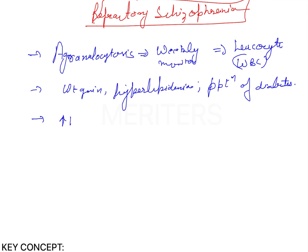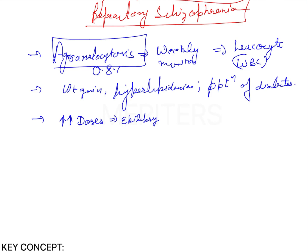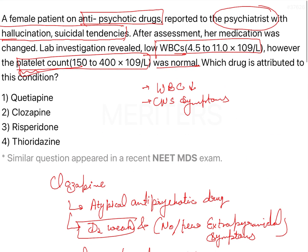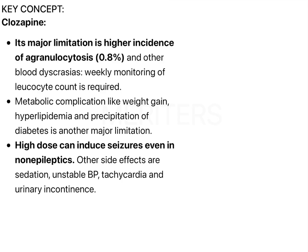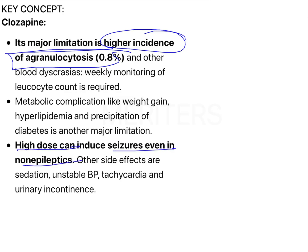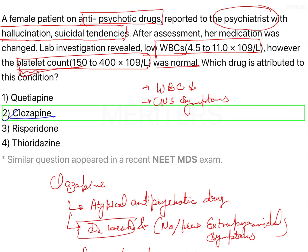If this drug is given in high doses, it can lead to the development of epilepsy. It is also associated with a few cases of myocarditis, though that is not very prominent. Agranulocytosis is seen in approximately 0.8% of the population and is characteristic of Clozapine. So the answer is Option 2 — Clozapine. The key concepts: major limitation is high incidence of agranulocytosis at 0.8%, and high doses can induce seizures even in non-epileptics.